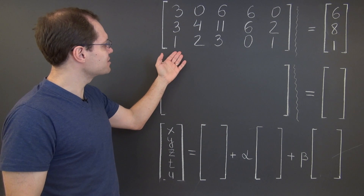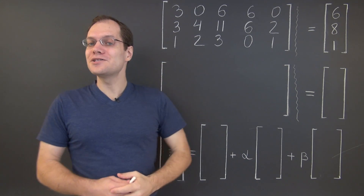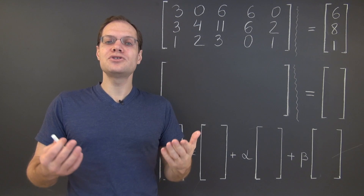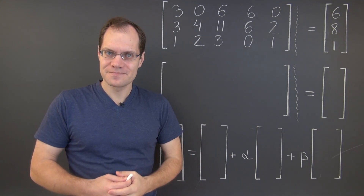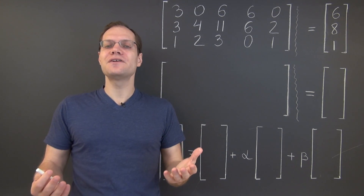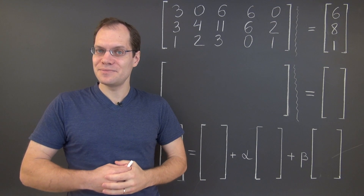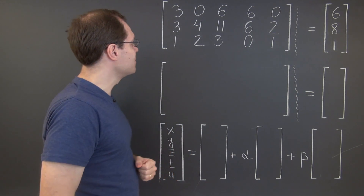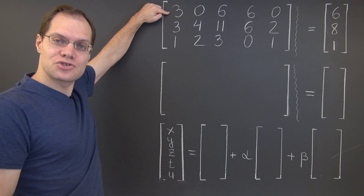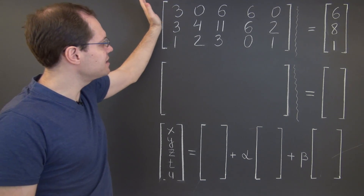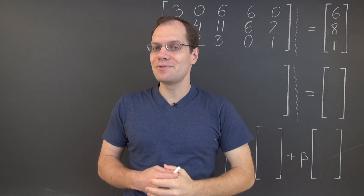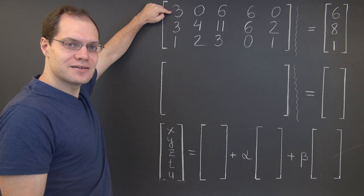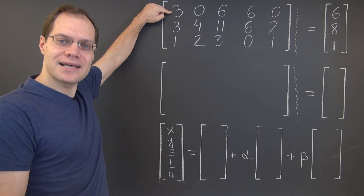Consider this system. Because we'll be solving this system by hand, we do want to work with unit pivots. But even then, there are about four different ways in which you could approach Gaussian elimination in this case. For example, you could divide the first row by three — every number in the first row is divisible by three — and that would give you a unit pivot in the familiar place, top left.